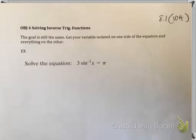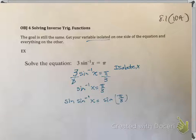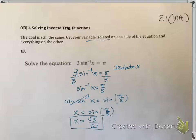Last page of 8.1: solving inverse trig equations. The goal is to get the variable isolated. Starting with 3 times inverse sine of x equals pi — divide both sides by 3, giving inverse sine of x equals pi over 3. To get rid of inverse sine, apply sine to both sides; they cancel, leaving x equals sine of pi over 3, which is 60 degrees. Sine of 60 degrees is radical 3 over 2. That is the answer.